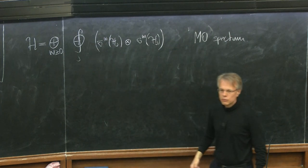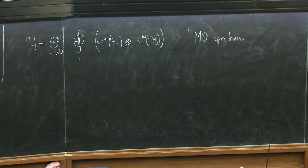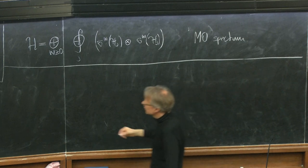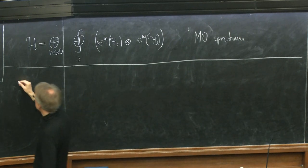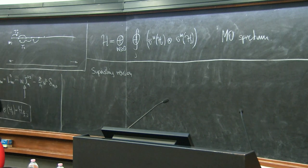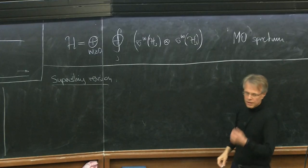Now we have identified the world-sheet spectrum, and the aim is to work out the physical states satisfying the physical state conditions. But before doing that, there is one more thing: so far we have done everything bosonic, which captures the essence of spectral flow. But in order to really get the symmetric orbifold, we have to deal with the superstring. What's the superstring version?